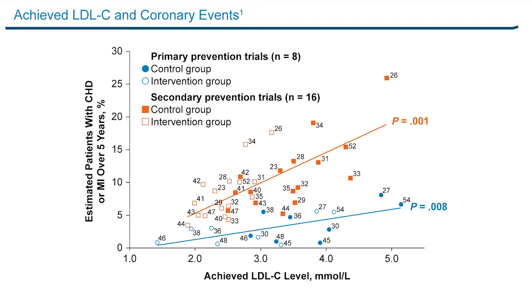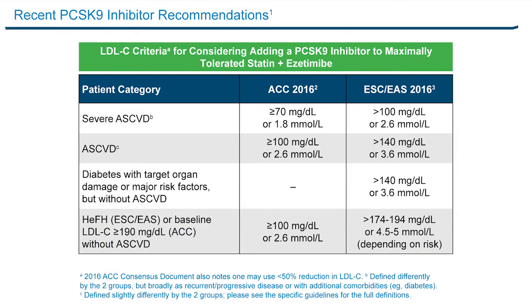So 40 milligrams per deciliter is a new target for us to start thinking about. Fortunately, both the ACC and counterparts in Europe have recently released guidelines addressing how to integrate PCSK9 inhibitors into clinical practice. The US guidelines call for consideration of PCSK9 inhibitors if the LDL cholesterol level in patients with known atherosclerotic disease is greater than or equal to 100 milligrams per deciliter. For those with severe atherosclerotic cardiovascular disease — meaning a recent acute coronary syndrome, or disease plus diabetes or history of multiple MIs — they call for considering adding a PCSK9 inhibitor if LDL cholesterol remains above 70 despite treatment with a statin and maybe ezetimibe as well. And I think as we get additional data, these targets will drop even further.